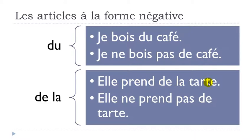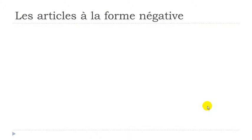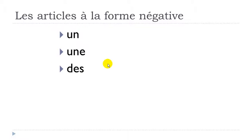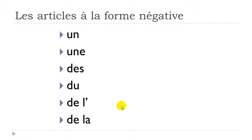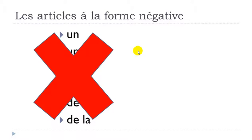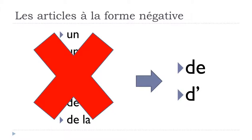Second example with the feminine partitive 'de la': elle prend de la tarte — she takes some pie. In the negative form: elle ne prend pas de tarte. So 'de la' becomes 'de.' Whether you have 'un,' 'une,' 'des,' 'du,' or 'de la,' when the sentence is negative you use 'de' instead.